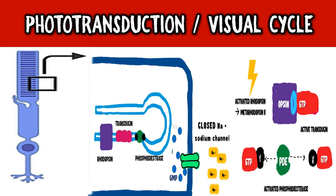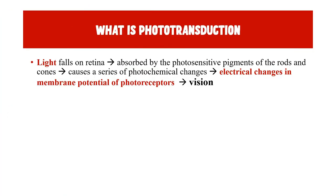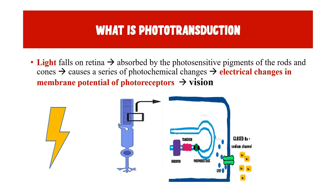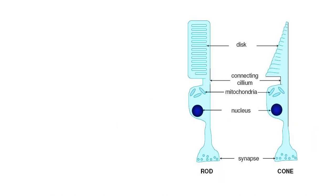Hello and welcome. This is Dr. Amrit welcoming you to another lecture. Today we are studying phototransduction or the visual cycle. Phototransduction is the process where light falls on the retina and is absorbed by photosensitive pigments in the rods and cones, causing a series of photochemical changes leading to electrical changes in membrane potential, and ultimately to vision.